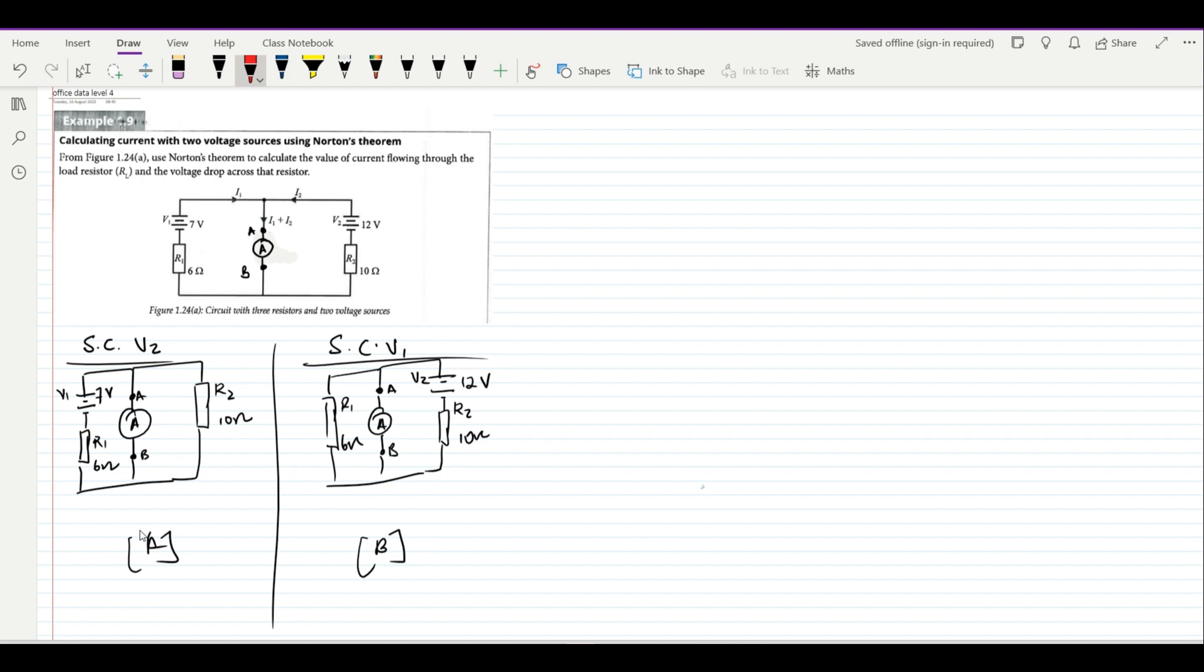This means that only this side of the circuit is where current will be experienced. Automatically the R2 resistor will not be receiving current, so it will be automatically cut out.